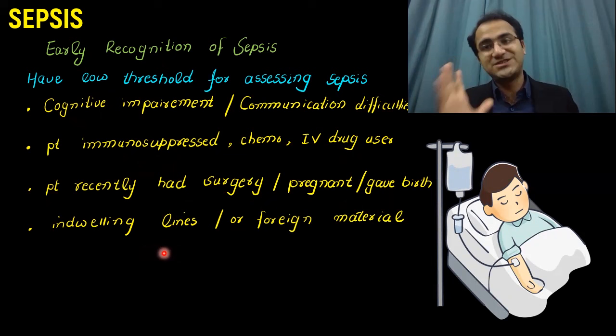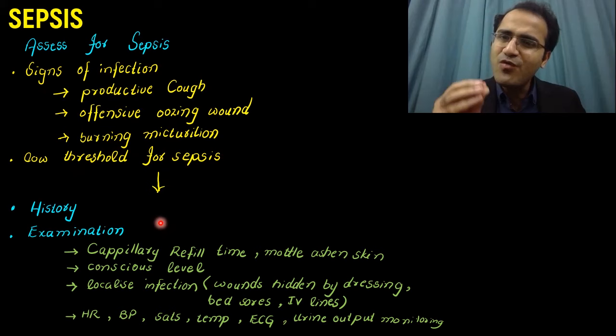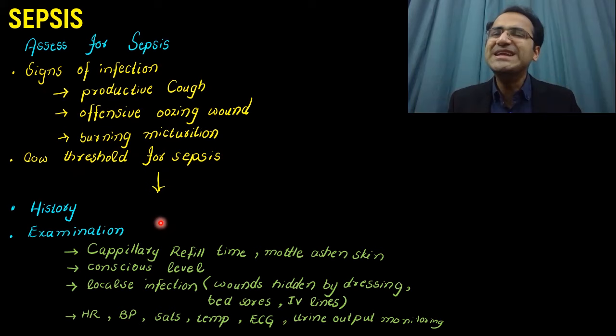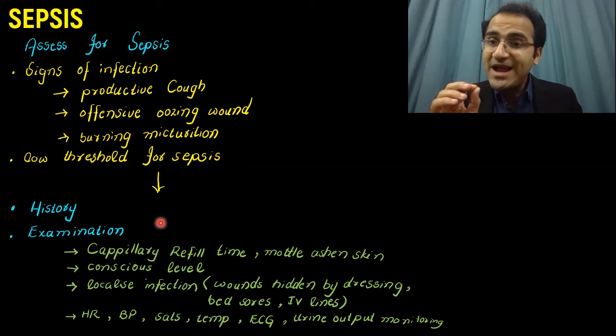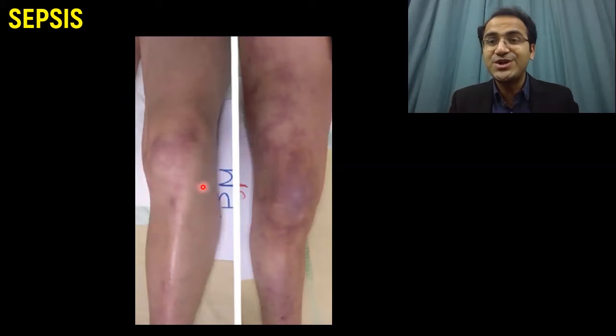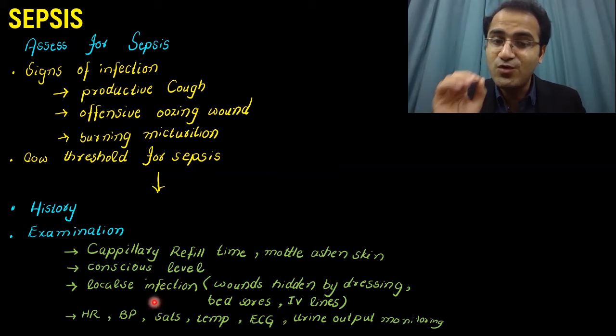After assessing a patient with sepsis, take a detailed history and perform a detailed examination. Look for capillary refill time, which will be delayed in these patients because there is lack of perfusion — the body is unable to maintain blood pressure. Look for mottled ashen skin, which results from lack of perfusion to the organs. Assess the conscious level, as these patients will be altered in time, place, and person. Look for localized infection, wounds hidden by dressings, bed sores, and IV lines.